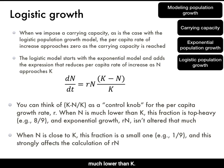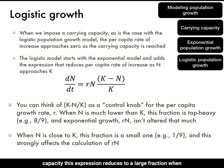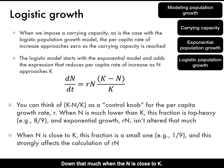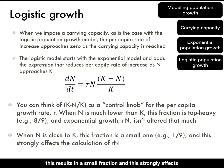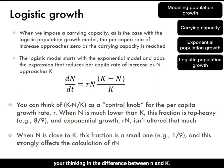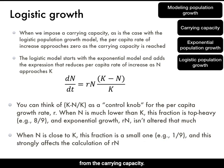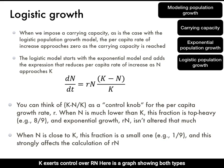Think of the expression (K − N)/K as a control knob for the per-capita growth rate r. When N is much lower than K, this expression reduces to a large fraction close to one, so the exponential growth rate rN isn't slowed down much. When N is close to K, this expression results in a small fraction that strongly reduces rN. Try to ground your thinking in the difference between N and K: are we at a population size close to or far from the carrying capacity, and what does that mean for how (K − N)/K controls rN?